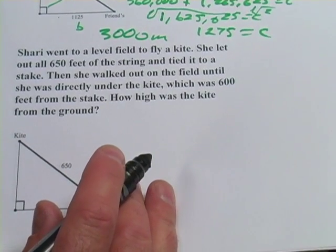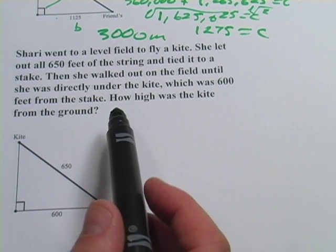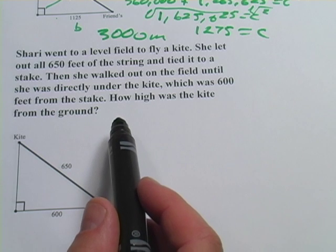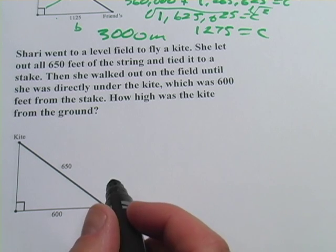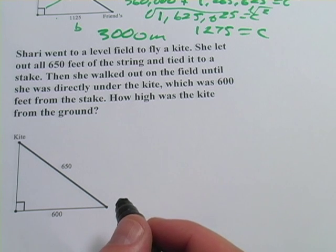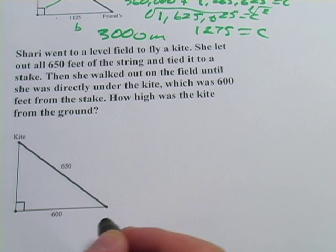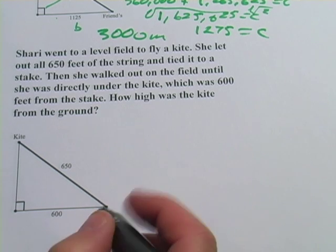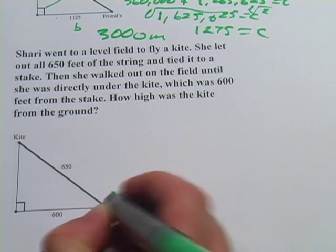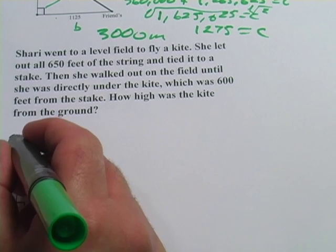Let's try one more, this is kind of an interesting one. It says, Sherry went to a level field to fly a kite. She let out all 650 feet of the string and tied it to a stake. Then she walked out on the field until she was directly under the kite, which was 600 feet from the stake. How high was the kite from the ground? So here's Sherry originally, she's flying her kite here, and then she stakes the string in the ground, and her kite's up here, right?